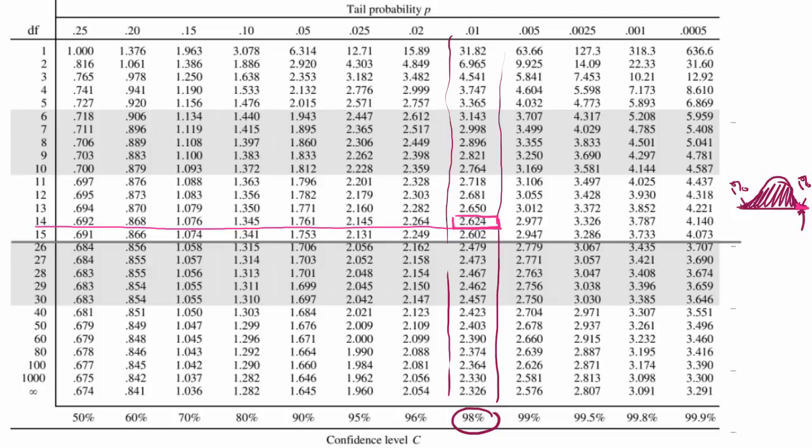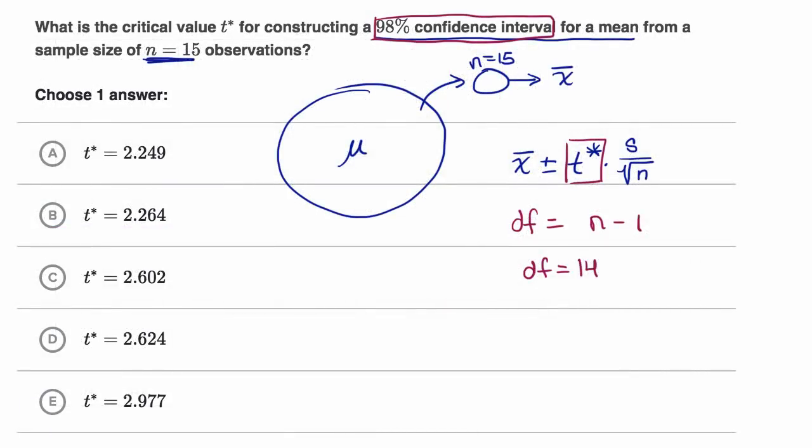So let's just go back over here. And so there you have it. We have 2.624 is our answer.